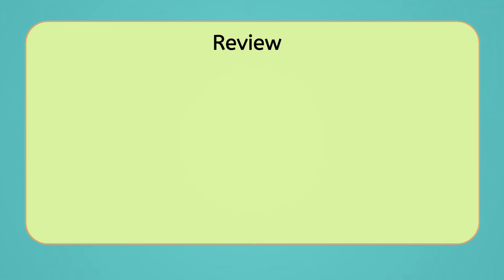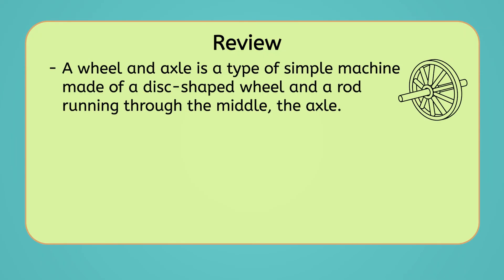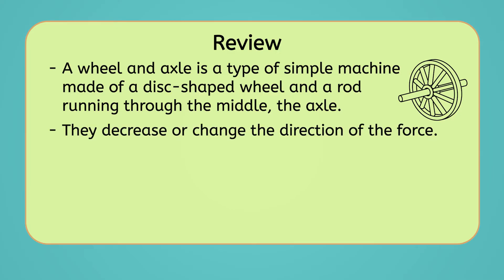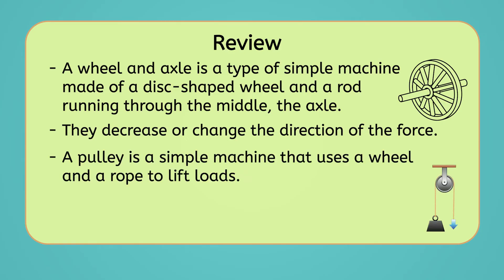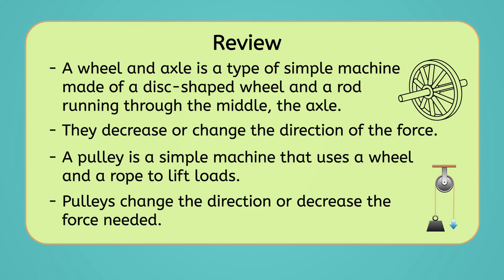While I finish setting up my prank, let's review everything we've learned today. A wheel and axle is a type of simple machine made of a disc-shaped wheel and a rod running through the middle of it — the axle. Wheels and axles help us to do work by decreasing the force needed to move loads, or by changing the direction of the force. A pulley is a simple machine that uses a wheel and a rope to lift heavy objects by connecting the load to one side and pulling down on the other side. They make work easier by changing the direction of the force or decreasing the force needed as you add more wheels.